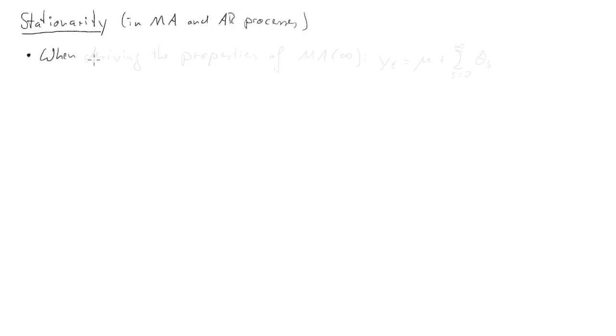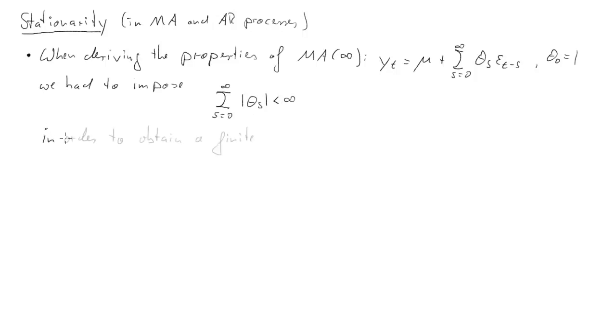Now you may remember that when we derived the properties of the MA(∞) process, here it is, the MA(∞) process, remember θ₀ is equal to 1. We actually had to impose some restrictions on the coefficients. We had to impose this absolute summability restriction, and the reason why we had to do that was to ensure that we got a finite variance for our process yₜ. And the variance was σ² times the sum of all θₛ squared.